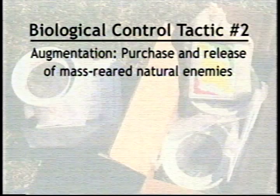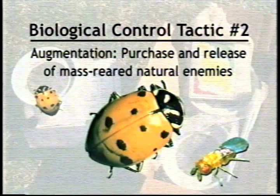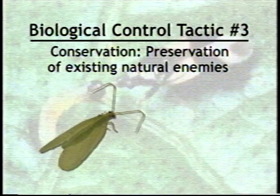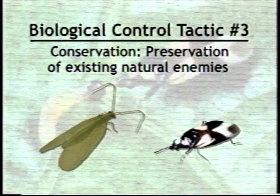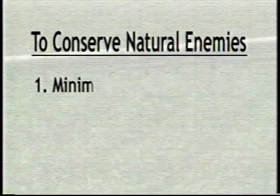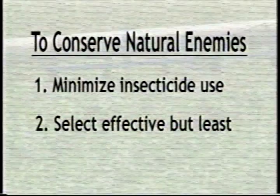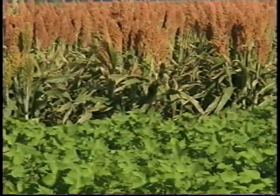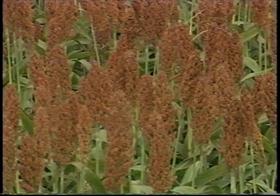Some natural enemies are mass-reared or collected and sold for release. Lady beetles and tiny trichogramma wasps are sometimes promoted for use in cotton. Unfortunately, research shows these releases give little benefit because they're too expensive at effective levels. Conserving natural enemies already present in the cotton field offers the greatest biological control potential. These natural enemies are entrenched and well adapted to the field. They just need a little help. Natural enemies can be conserved by minimizing insecticides and by using insecticides that are effective against the pest, but less toxic to natural enemies.